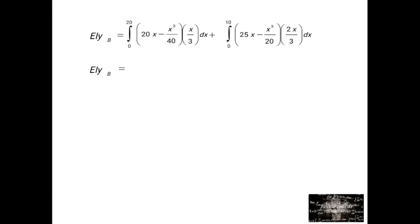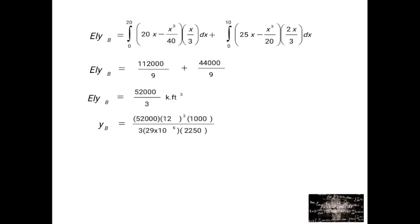Using a calculator, for span AB we get 112,000 over 9, and combining both spans we get 52,000 over 3 kip-feet cubed. Converting to inches: YB equals 52,000 times 12 cubed times 1000, divided by EI — that is 29 times 10 to the 6 times 2250. So YB equals 0.459 inches, acting downward.